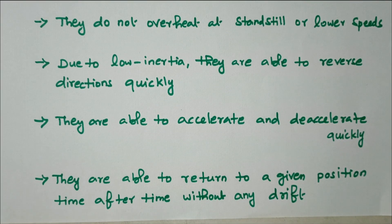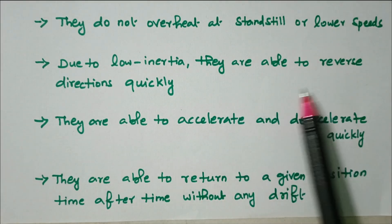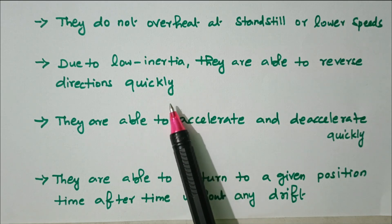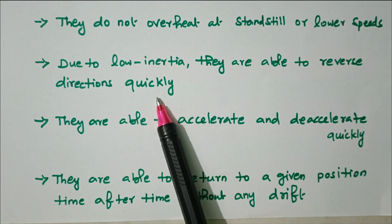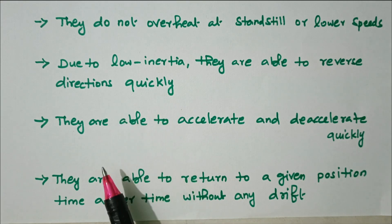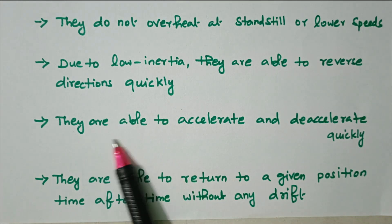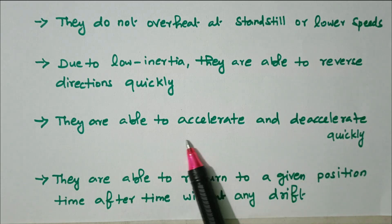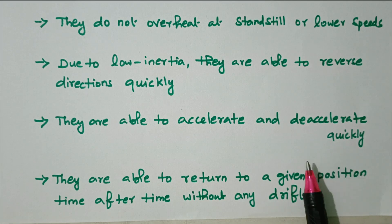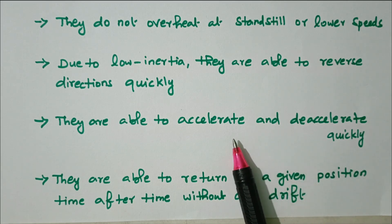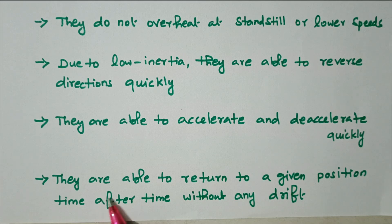Due to low inertia, they are able to reverse the direction quickly. Reversing of direction is made easy and fast. They are also able to accelerate and decelerate quickly — acceleration and deceleration can be done quickly.